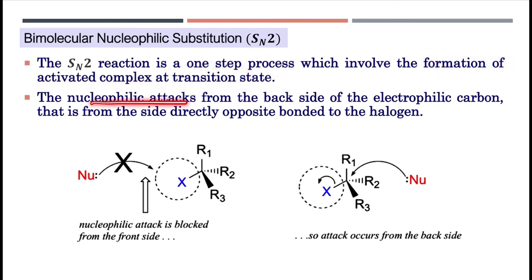In SN2 reaction, the nucleophile will attack from the back side of the electrophilic carbon, that is from the side directly opposite bonded to the halogen atom. So as you can see here, the nucleophile will not attack from the front because it is blocked by the halogen. The nucleophile will attack from the back side.